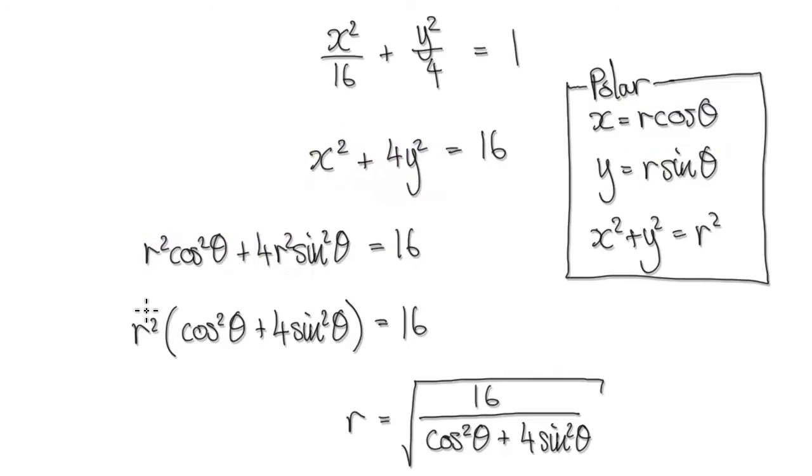Factor out the r squared and then rearrange it to make r the subject. So divide both sides by this and then square root it, you get the positive version and the negative version.